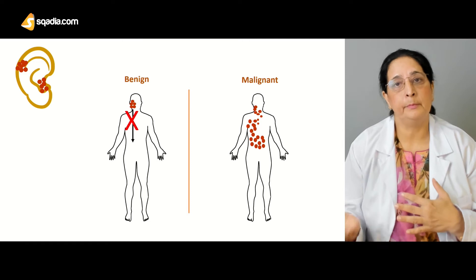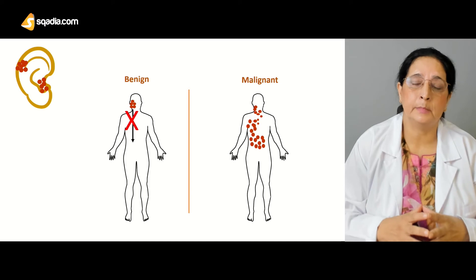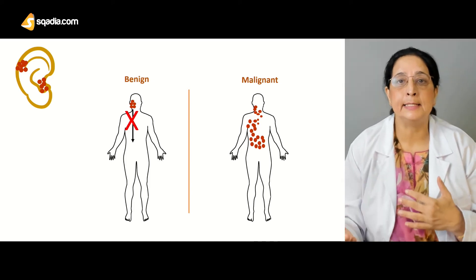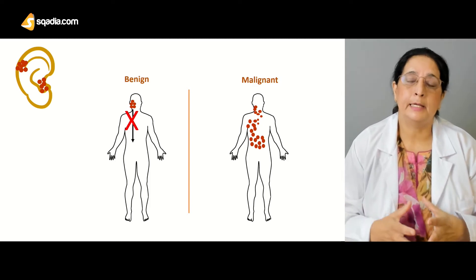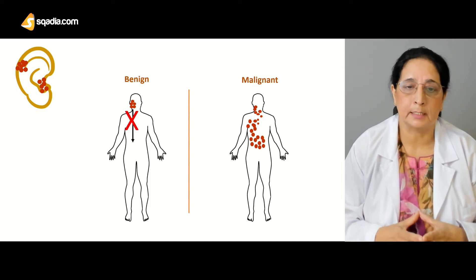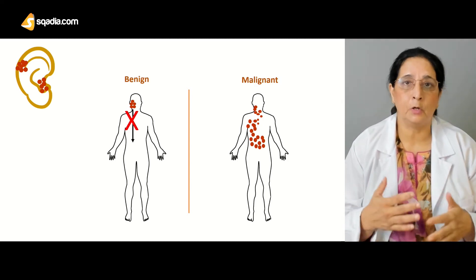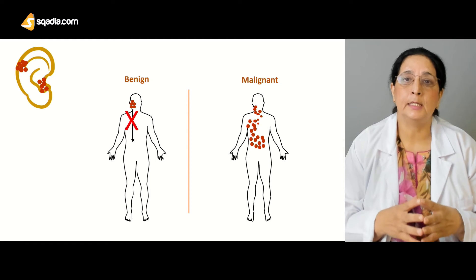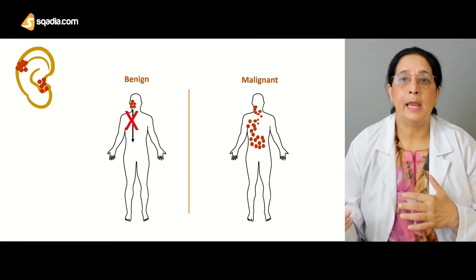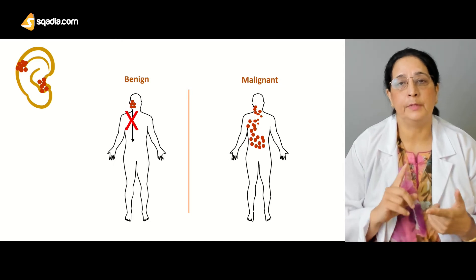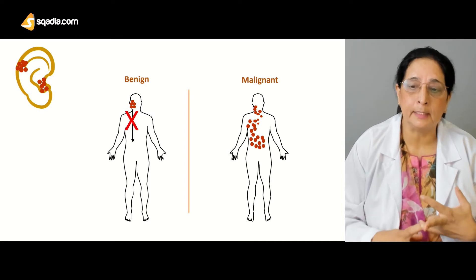Early diagnosis is important for the prognosis of cancer. If detected late, the cancer has already spread to distant sites and can cause very serious damage. So we will talk about both benign and malignant tumors of the pinna or auricle and the external auditory canal.